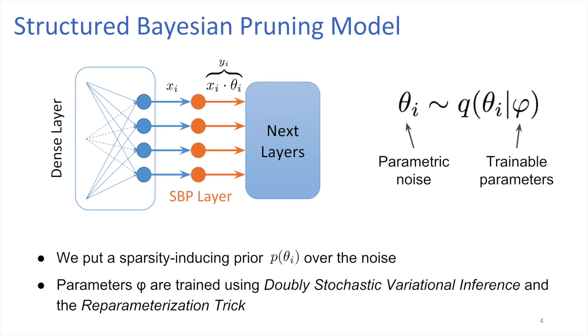To achieve sparsity, we put a sparsity-inducing prior over θ and use doubly stochastic variational inference to train the parameters of the noise.